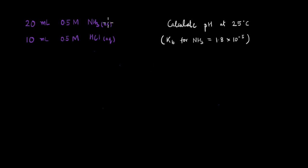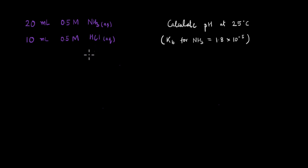We know that NH₃ is a weak base and HCl is a strong acid, so we know that an acid-base neutralization will happen. First, let us calculate the number of moles of NH₃ and the number of moles of HCl which can take part in the reaction.